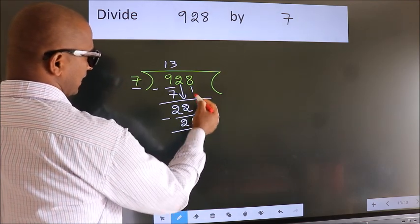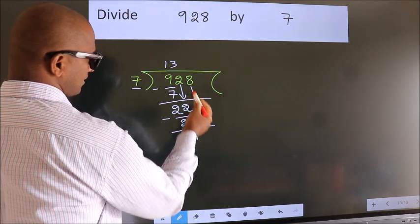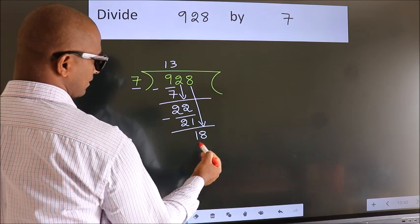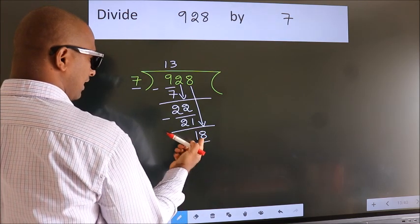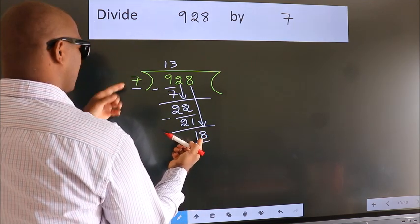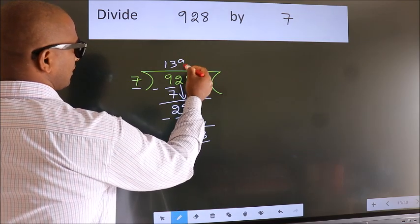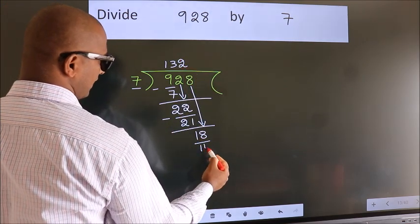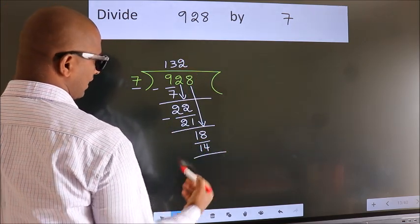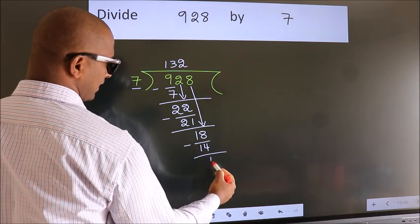After this, bring down the beside number. So 8 down. So 18. A number close to 18 in 7 table is 7 twos 14. Now we subtract. We get 4.